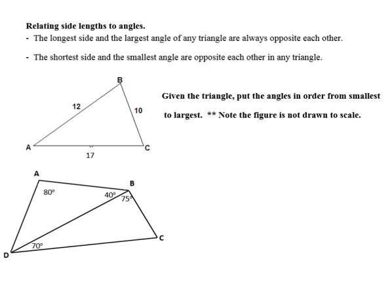Something else relating to triangle inequality are lengths of sides and angles. So what we're told is that the longest side and the longest angle of any triangle are always opposite of each other. Similarly, the shortest side and the smallest angle are always going to be opposite of each other as well. So something that you may see is a problem like this where I give you the sides of a triangle. And I'll ask you, put the angles in order from smallest to largest. So typically what I like to do here is just label your sides small, medium, large.